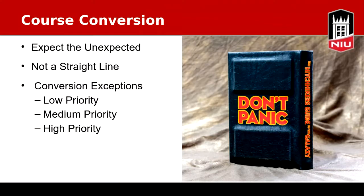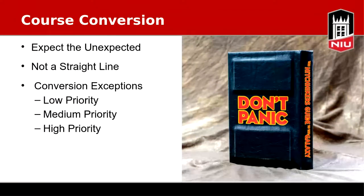You really want to pay attention to the high priority exceptions, because those are unsupported features — things that are going to be completely different or not even work in the Ultra view. An example would be wikis or blogs, which are not currently supported. If your course relies heavily on those, that would be a deal breaker. The 'Is Ultra right for me' tab on our website gives you a nice comparison of conversion exceptions that may be deal breakers.